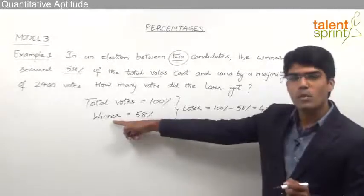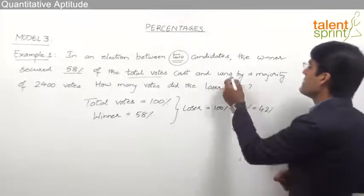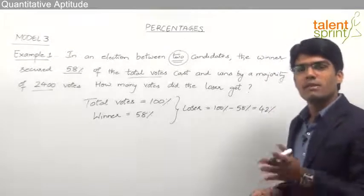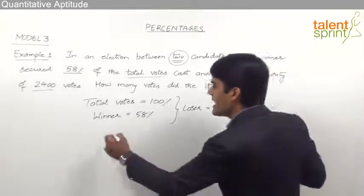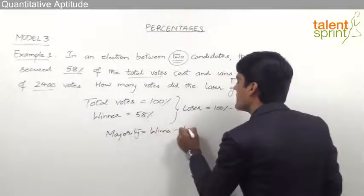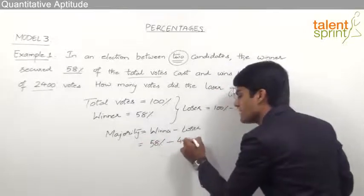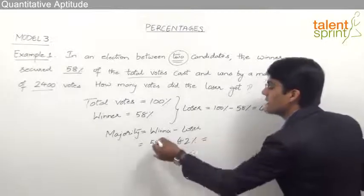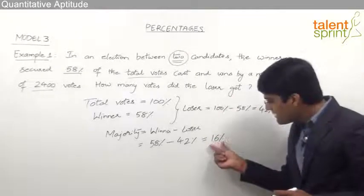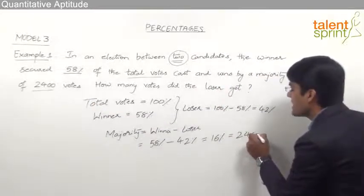So 58% has been obtained by the winner and the remaining 42% by the loser. The winner wins by a majority of 2400 votes. Majority is the difference between the number of votes of the two persons — winner's votes minus loser's votes. So the majority here is 58% minus 42%, which equals 16%. This 16% is equivalent to 2400 votes.